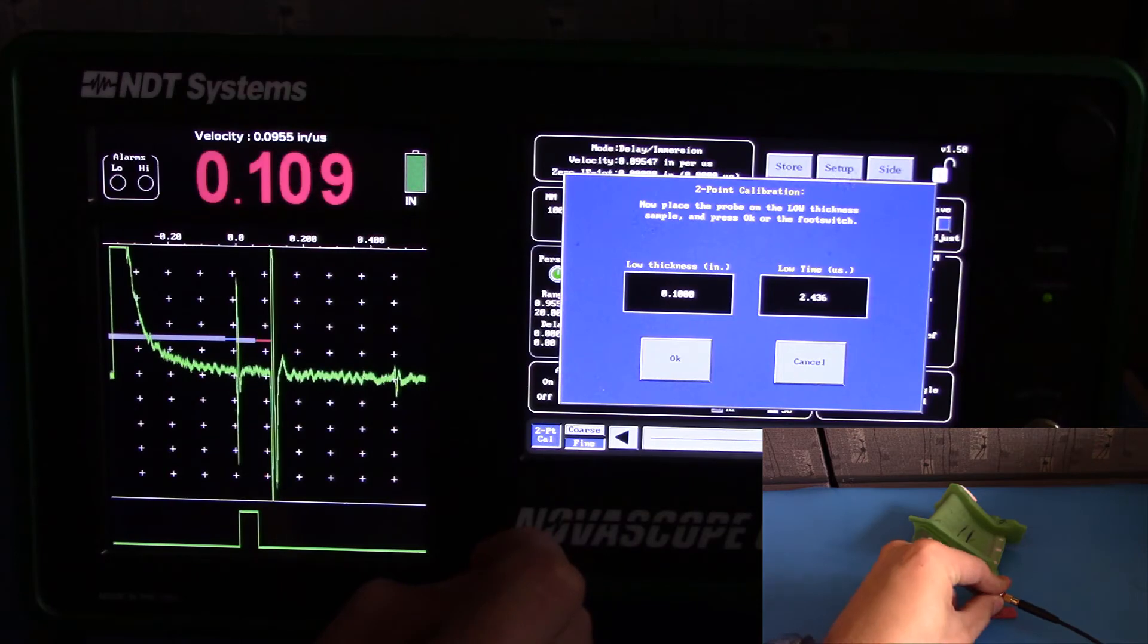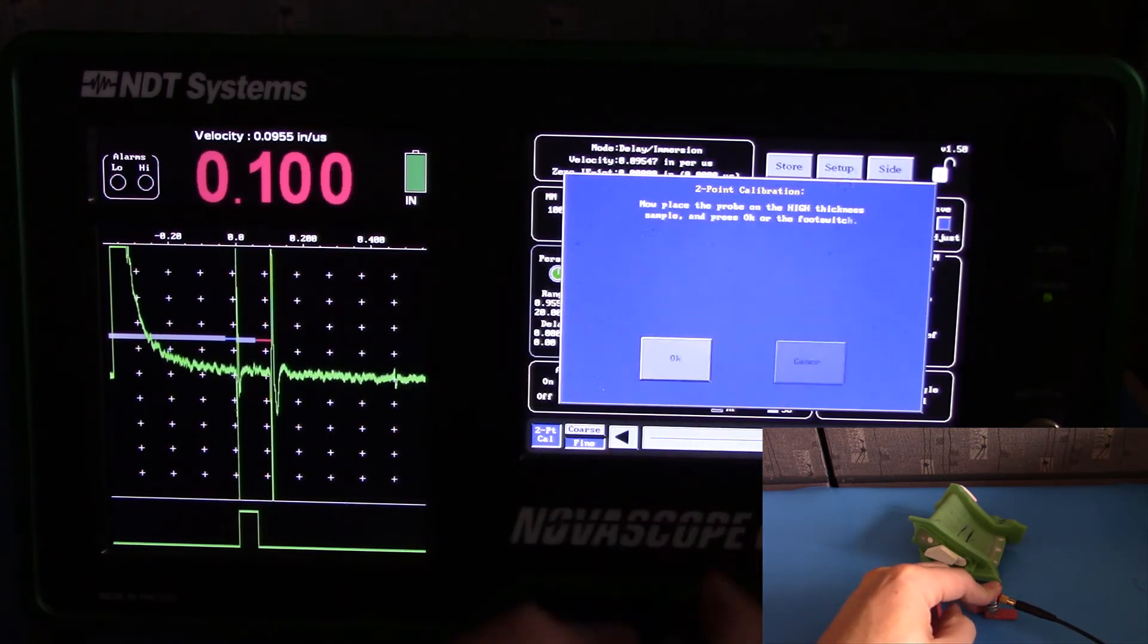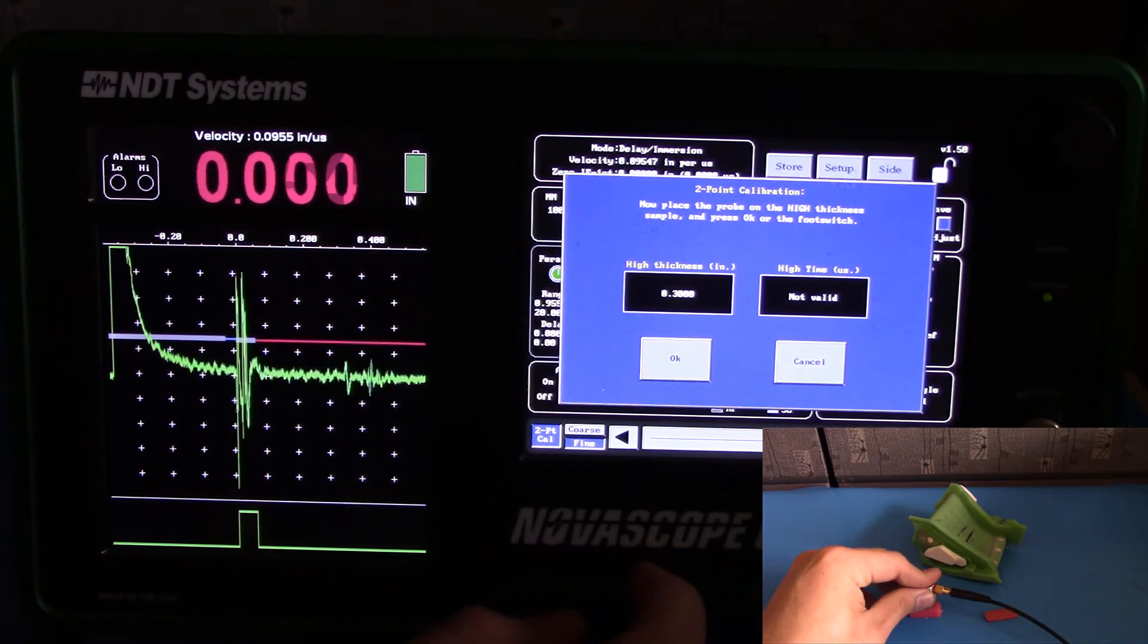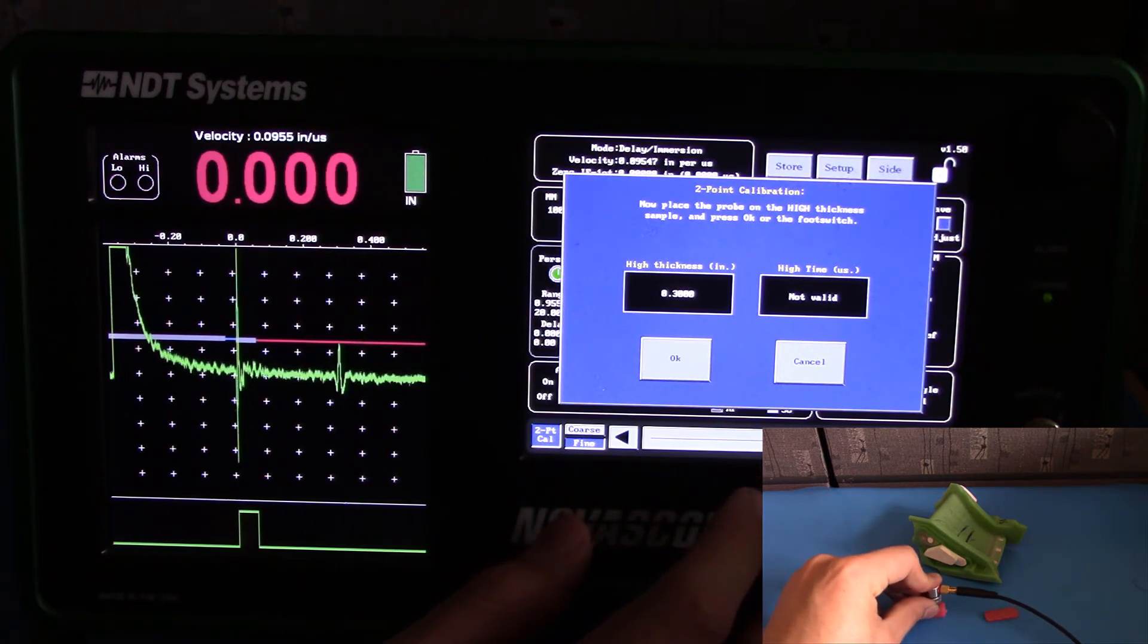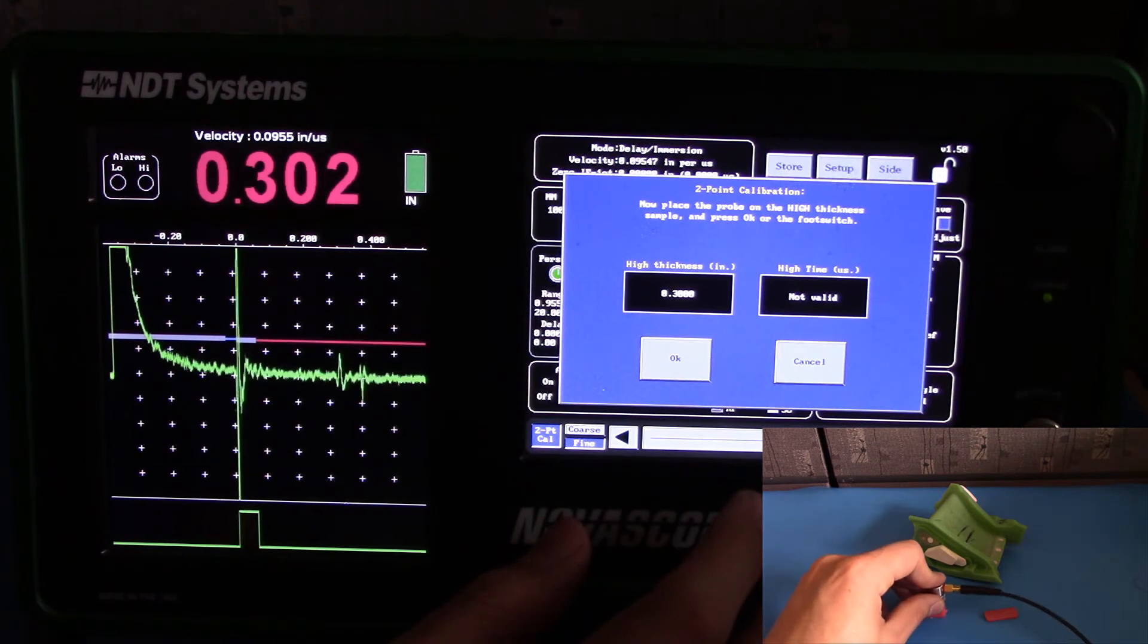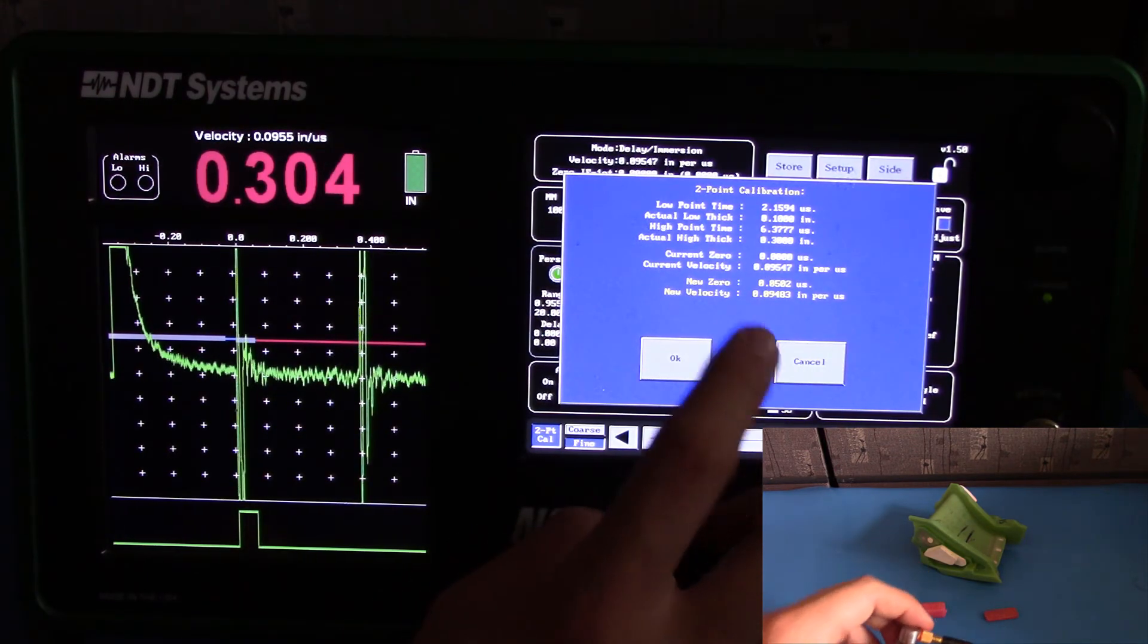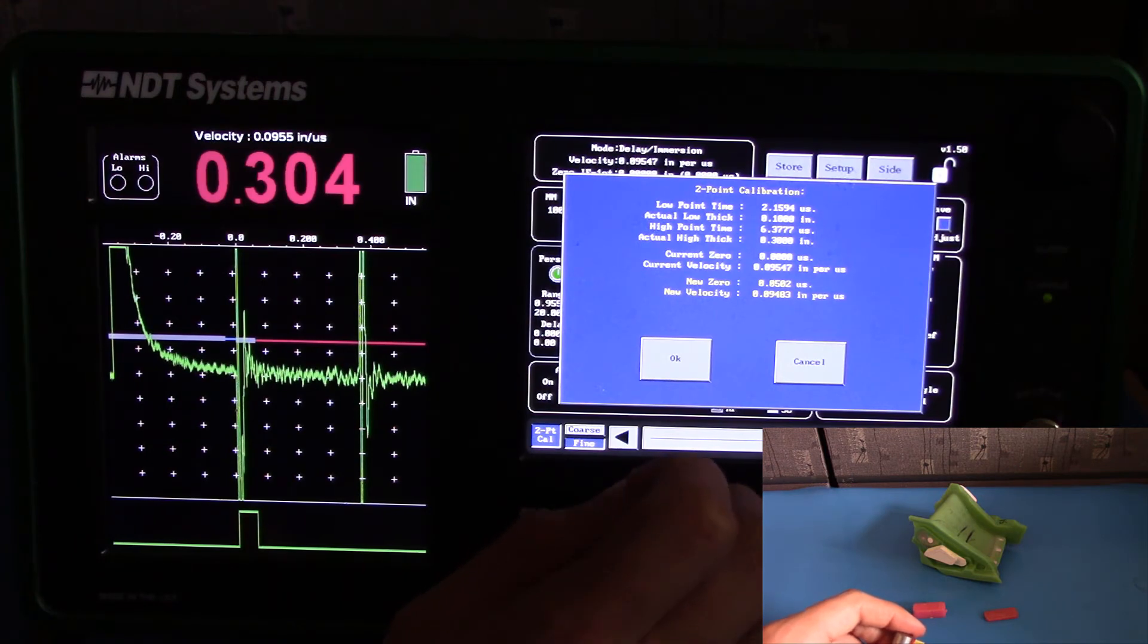Couple to the low thickness. Hit OK. Next, couple to the high thickness. Hit OK. And we'll be given a new zero and new velocity. Notice that the new velocity is significantly slower than that of a metal.